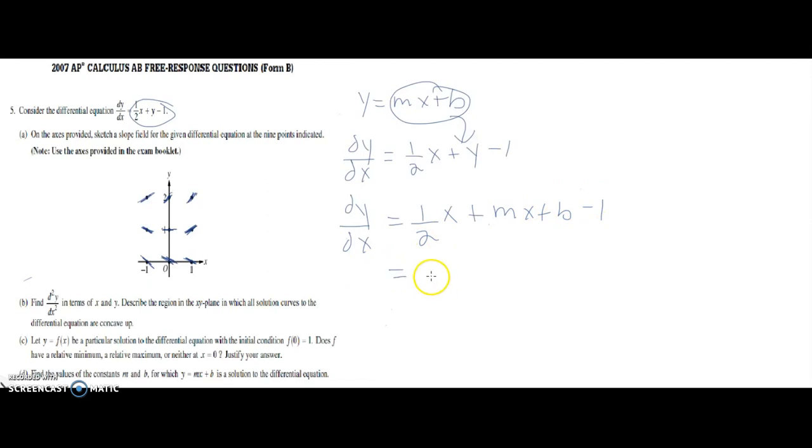Now we're going to pull out the x because we can factor it out, factor by grouping, so you get one-half plus m, plus you could technically take a one out of here and write b minus one.